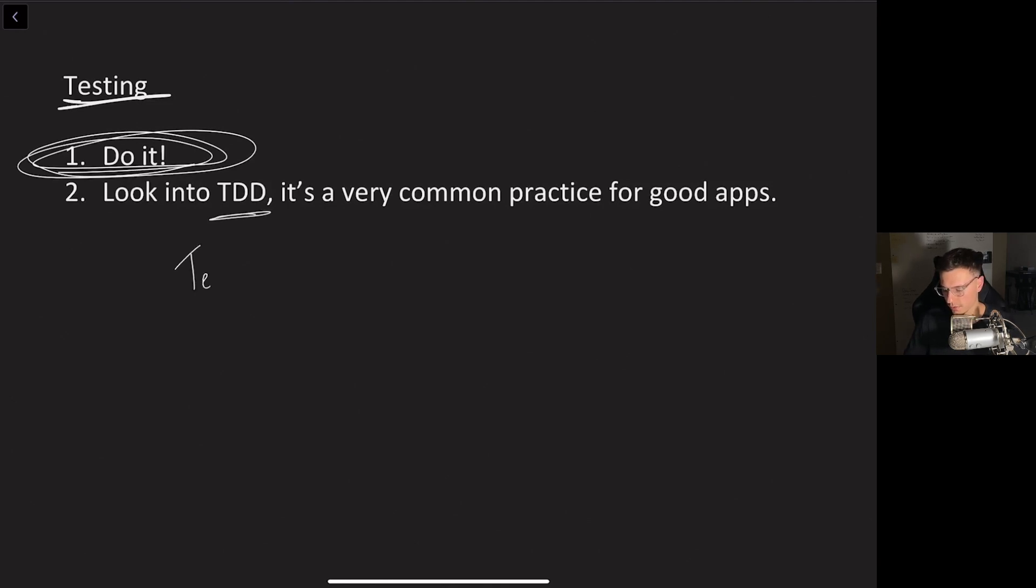So TDD is test driven development. And what that means basically you write your tests before you actually write the code for your software. And you might be thinking why does that make sense? How does that work? Well all the tests will fail at the beginning which is normal but writing your tests first means you're writing code that passes your tests.